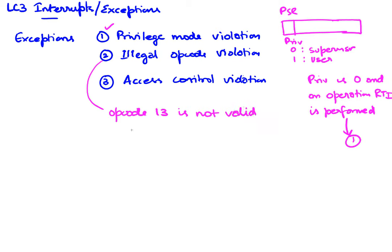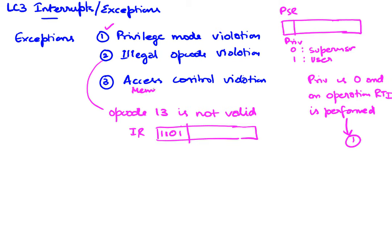An illegal opcode violation occurs because opcode 13 is not valid. So if you were ever to execute an instruction where the IR has 1101 in it, that is an opcode violation. The access control violation is really a memory access control violation.